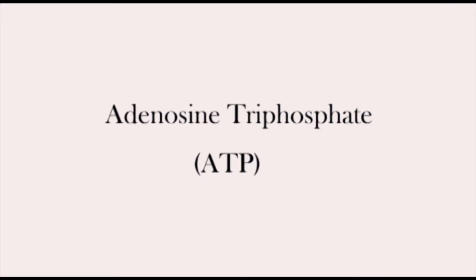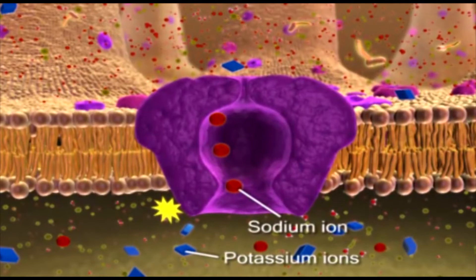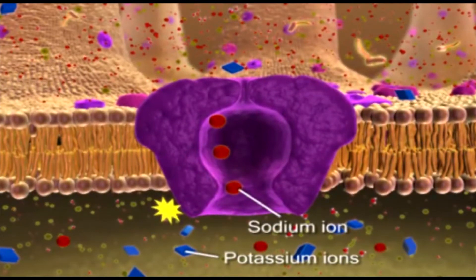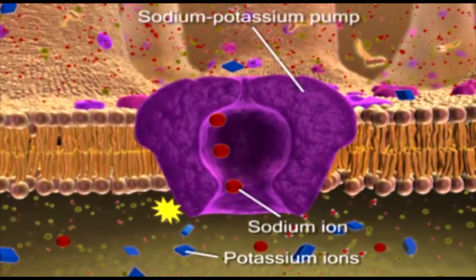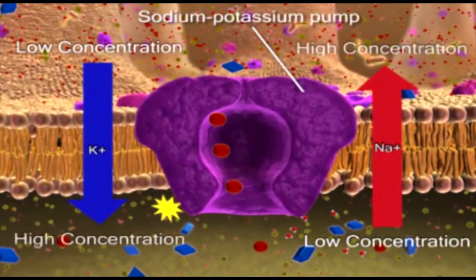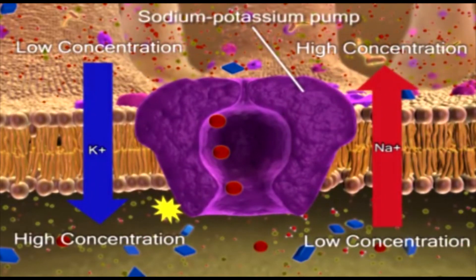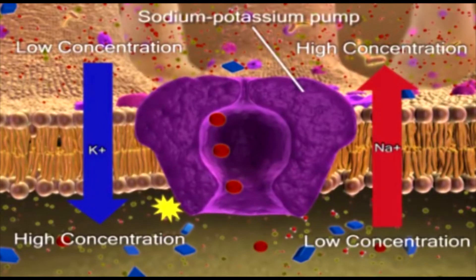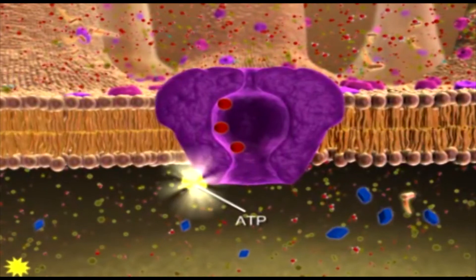Adenosine triphosphate, ATP, is the most common type of energy used in active transport. Active transport uses proteins called pumps to transport substances against their concentration gradient. For example, potassium ions are low outside the cell and sodium ions are low inside the cell. These ions start to move from their low concentration to high concentration, which requires energy in the form of ATP.